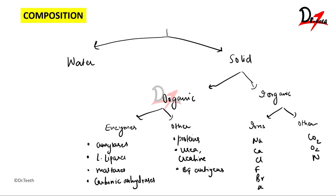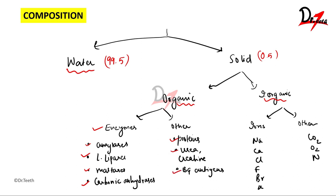Saliva mainly consists of water — approximately 99.5% is water and only 0.5% is made up of certain solids. These solids fall under two categories: organic and inorganic. Under organic forms we have enzymes like lipases, amylases, maltases, and carbonic anhydrases, as well as proteins, urea, creatinine, and blood group antigens. Inorganic components include ions such as sodium, calcium, chloride, fluoride, bromide, and potassium, as well as gases like carbon dioxide, oxygen, and nitrogen.